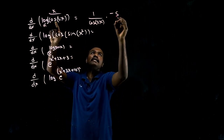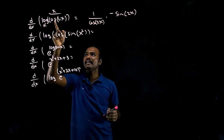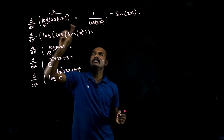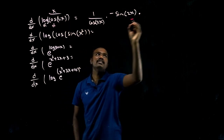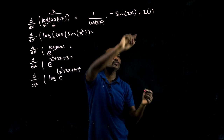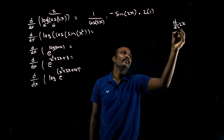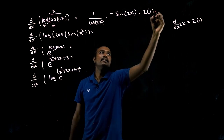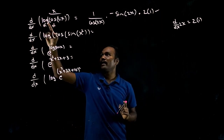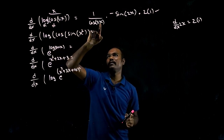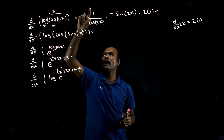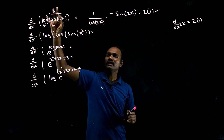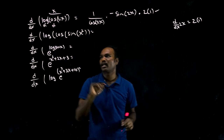Next, cos. Cos differentiation is minus sine. What is there inside? 2x. So minus sine 2x. Times. Next: cos x differentiation is done. Now 2x differentiation is what? 2 is a number, keep it out. x differentiation is 1. So 2x differentiation is 2. For the next question: log differentiation is 1 over cos of sine of x squared. Times. Cos differentiation is minus sine of x squared.